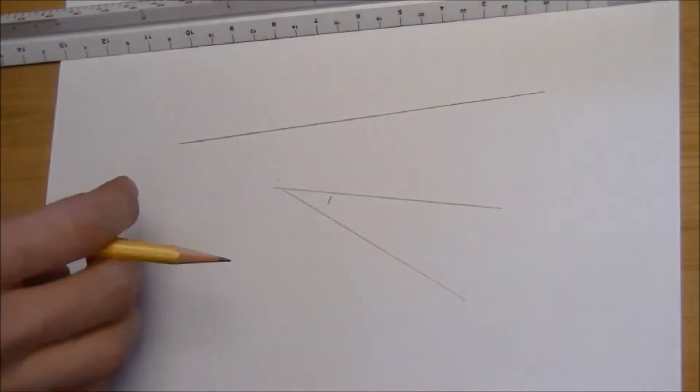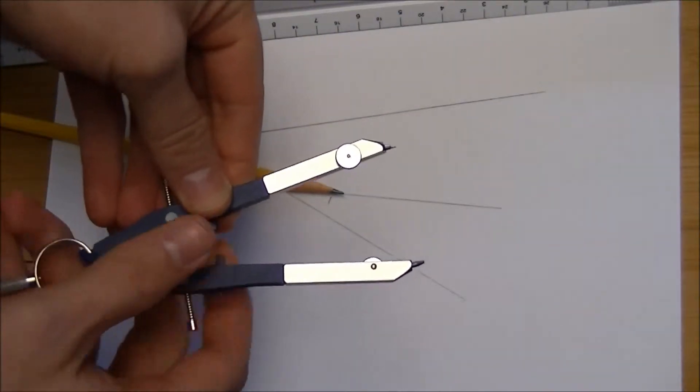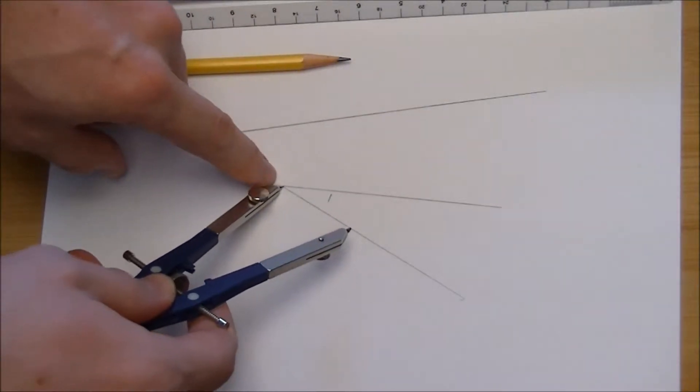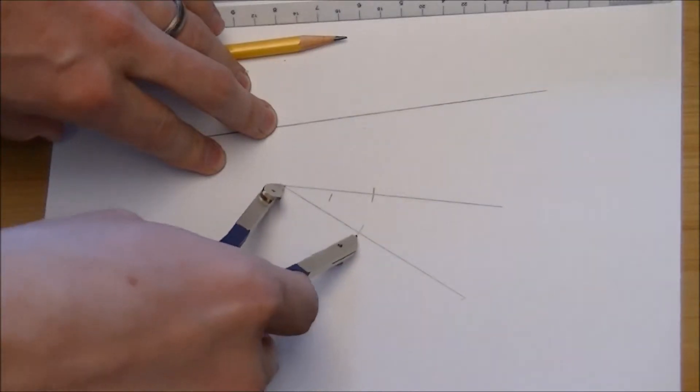Start with just a line, and then I adjust my compass, set it on the vertex here. And then I'll just make marks there and there.